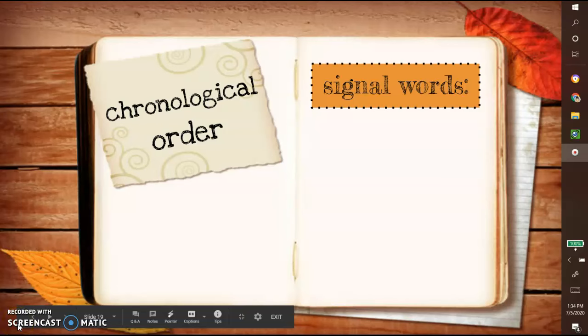Now when we look at the word chronological and we try to break it apart using what we know about word parts, chron, C-H-R-O-N, has to do with time. Chronological order has to do with time order and when things happen.